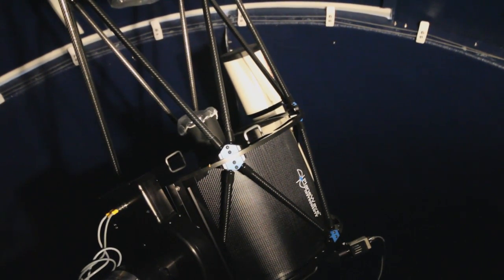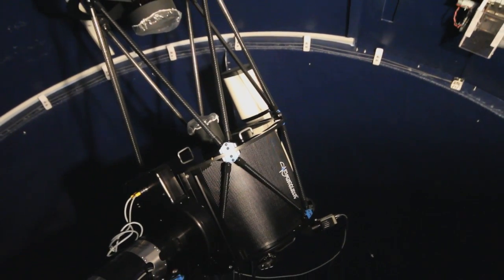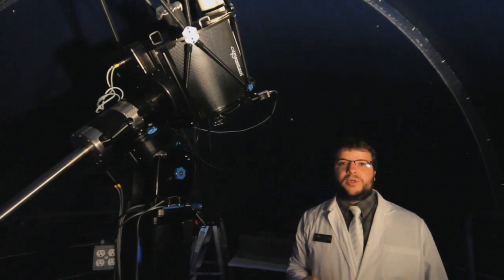Inside that 5-inch scope we have a Mallincam hooked up to a very small camera which is powerful enough to take the image that it's receiving and send it back to a computer.